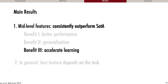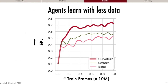You get better performance, but does it take longer to actually achieve that? We found that no — agents using mid-level vision learn with roughly an order of magnitude less data than agents trained from scratch, and this was true across tasks and environments.